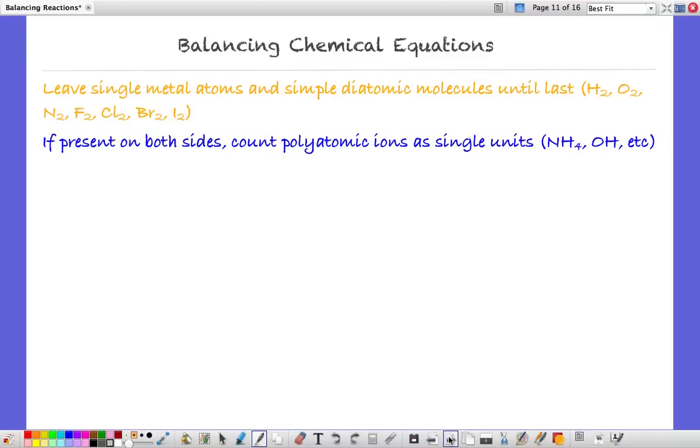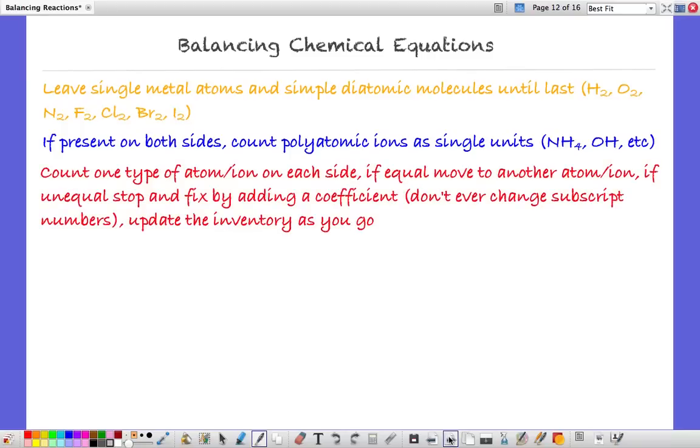Count one type of atom or polyatomic ion on each side. If it's equal in the inventory, that's good, move on to the next one. If it's unequal, stop and fix it by adding a coefficient. But don't ever touch the subscript numbers. And make sure you go back and update the inventory as you go for anything else that's affected by that change.